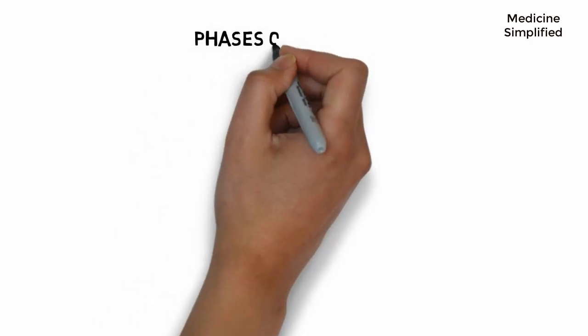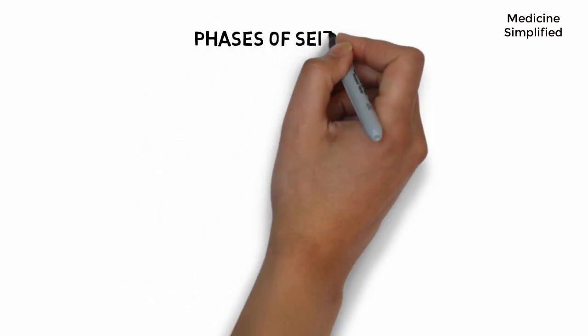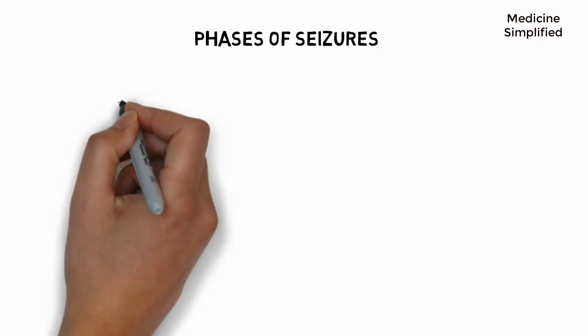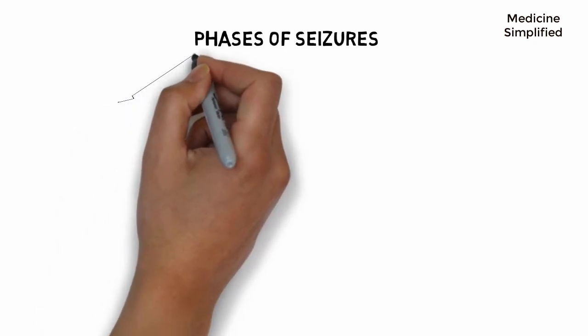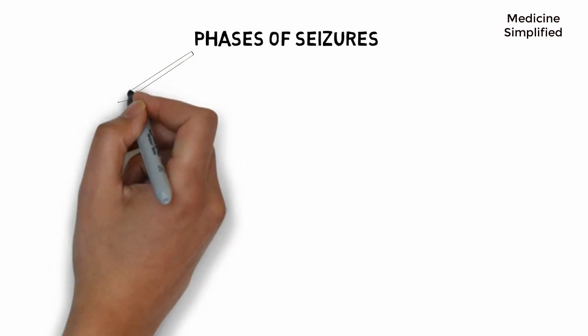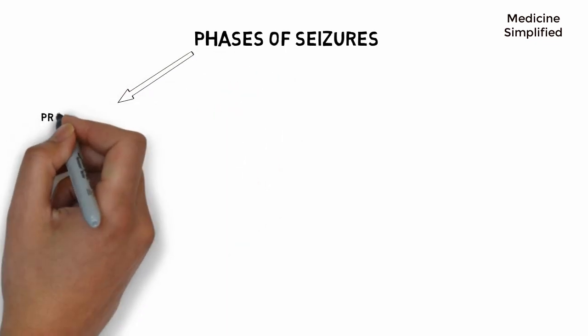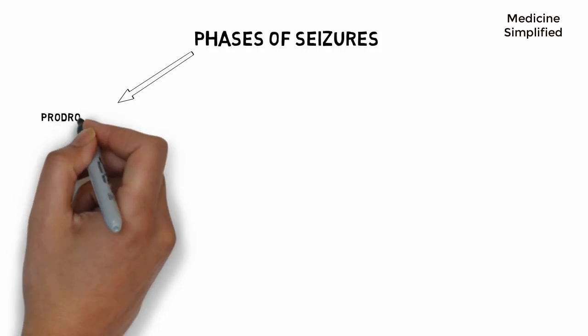Welcome to Meds in Simplified. Today we will learn about the phases or stages of seizures. There are a total of four phases in seizures.